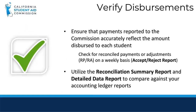You must verify disbursements by ensuring that payments reported to the Commission accurately reflect the amount disbursed to each student. You should check for reconciled payments or adjustments on a weekly basis and you can use the Accept-Reject report. You can also utilize the Reconciliation Summary report and Detailed Data report to compare against your accounting ledger reports.